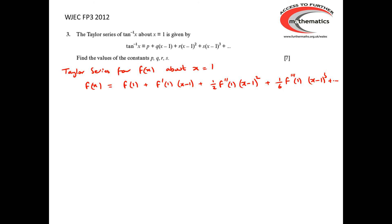The Taylor series for f of x about the point x equals 1 is f(1) plus f'(1) times (x minus 1), plus 1 over 2 factorial times f''(1) times (x minus 1) squared, plus 1 over 3 factorial, or 6, times f'''(1), the third derivative of f at 1, times (x minus 1) cubed, and so on.